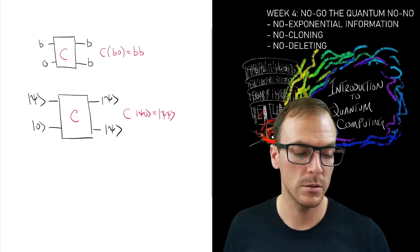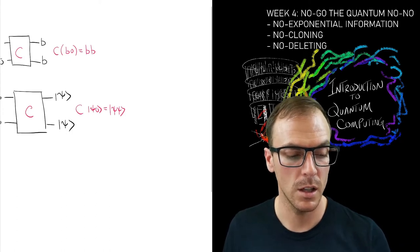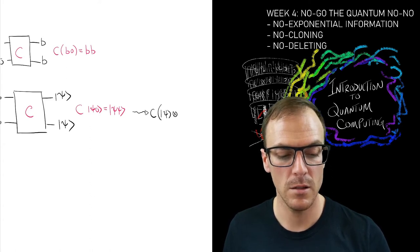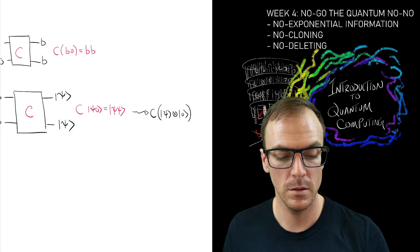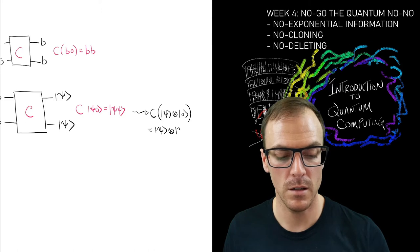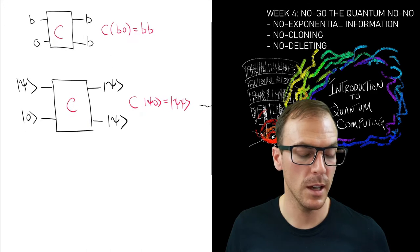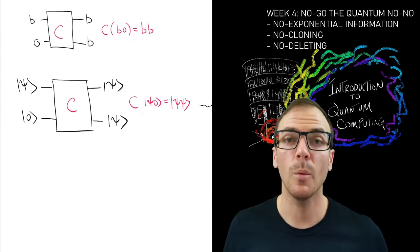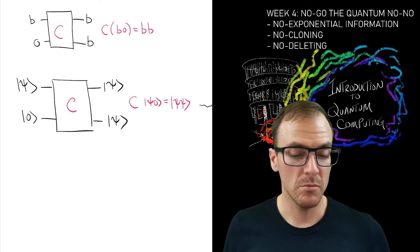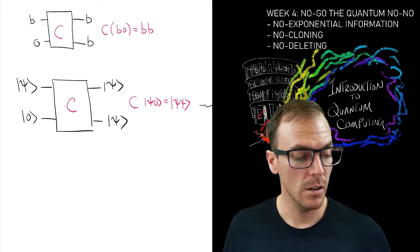So let's call that C—it has to be unitary. The most compact way to write it in the Dirac notation is C acting on |ψ⟩⊗|0⟩ equals |ψ⟩⊗|ψ⟩. So that's what we want—something that does that, and this would be our copy operation.